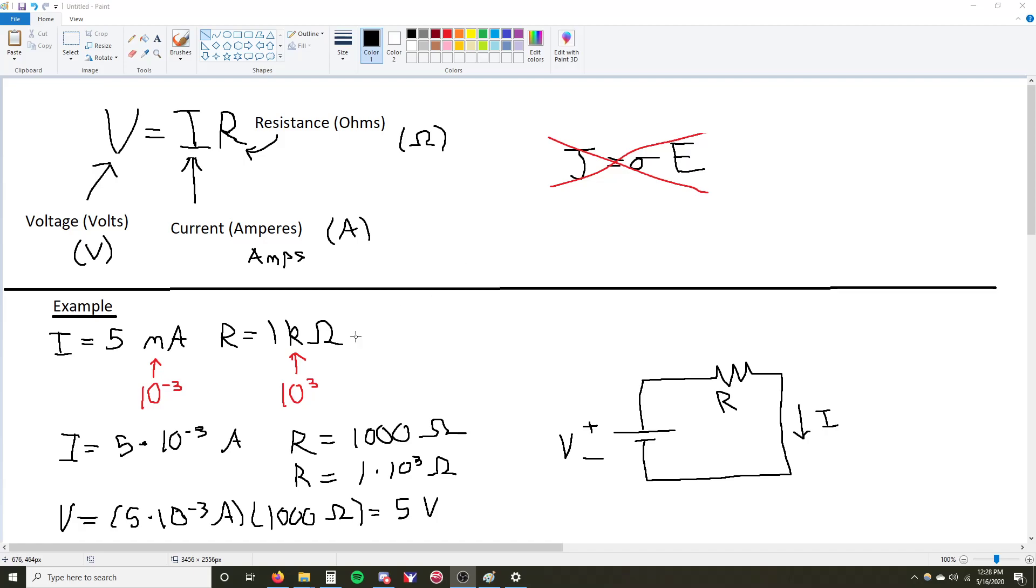In a very basic example, we are given this circuit here, the most basic circuit you can find. We are given the values for current and resistance.